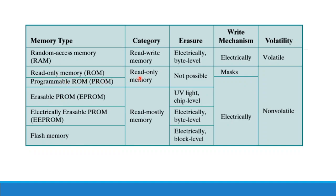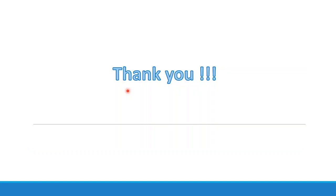To summarize the types of read-only memory: Mask ROM — erasure not possible, written at fabrication time. PROM — erasure not possible, written once. EPROM — erasure via UV light at chip level. EEPROM — electrically erasable at byte level. Flash memory — electrically erasable at block level. Hope the concept is clear. Thank you so much.